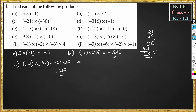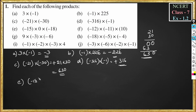Part d: minus 316 into minus 1. Minus into minus is plus, so 316 into 1 is 316. The answer is 316. Part e: minus 15 into 0 into minus 18.